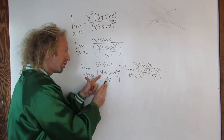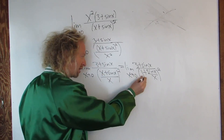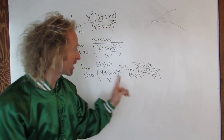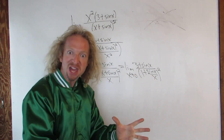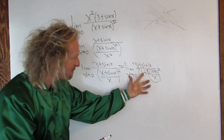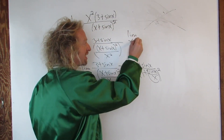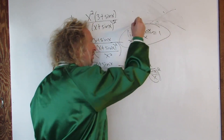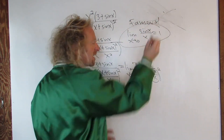X over x is 1, sine x over x is sine x over x. Now check this out: when x approaches 0, this is a famous limit. The limit as x approaches 0 of sine x over x equals 1. That's a famous, famous limit.